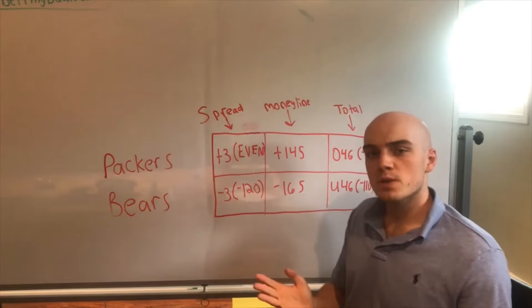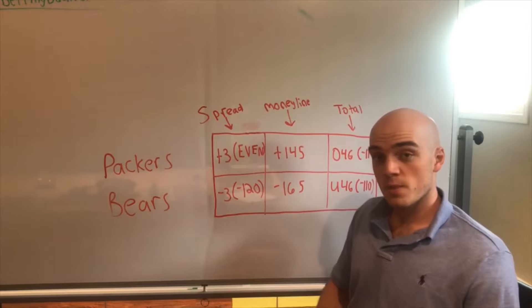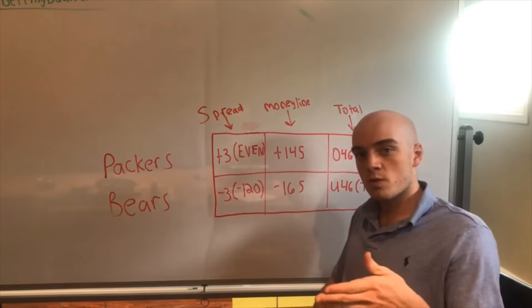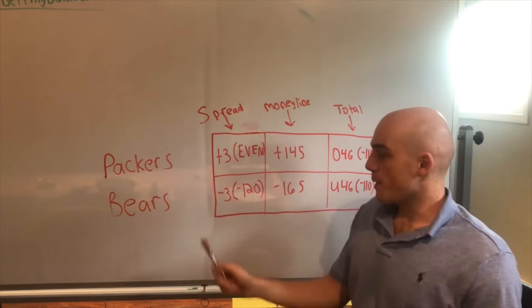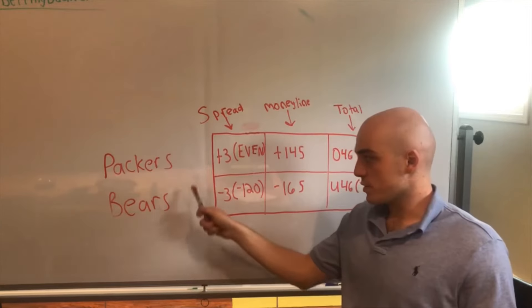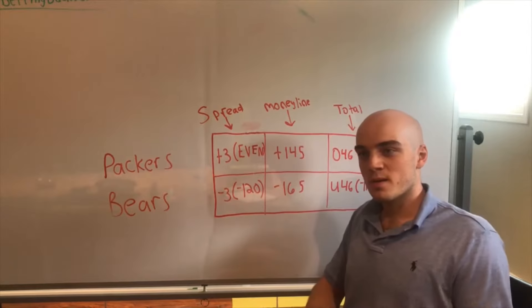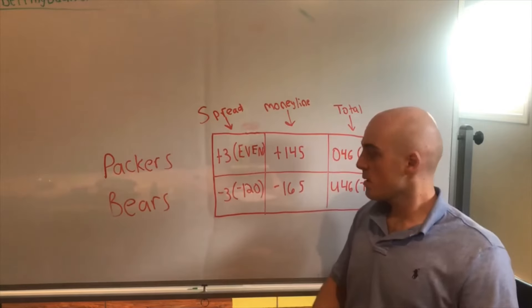In this instance, the Packers are plus three and the Bears are minus three. What this means is if you bet on the spread, you bet on the Packers plus three, then whatever the Packers score, you add three to the total at the end of the game. So if the Bears end up winning 24 to 14, add three to the Packers score - 17. 24 to 17, you still lose your bet.